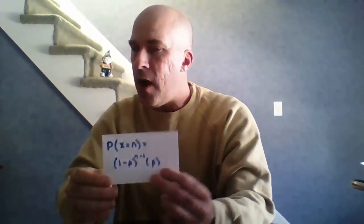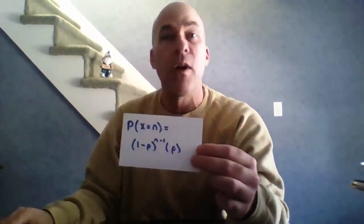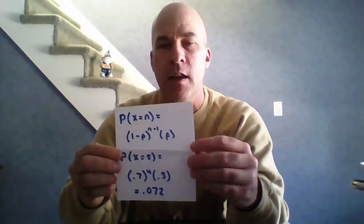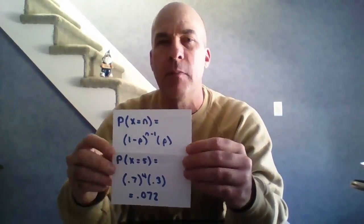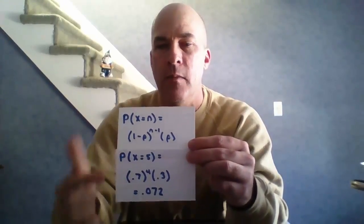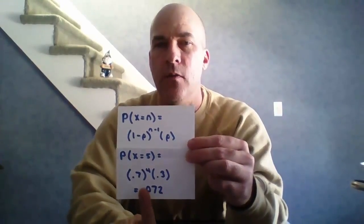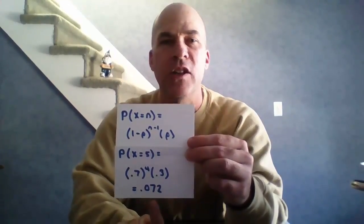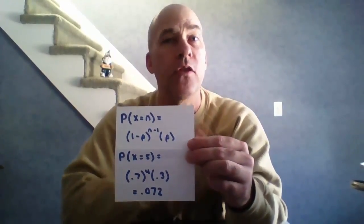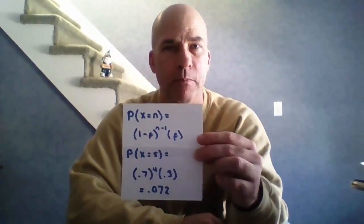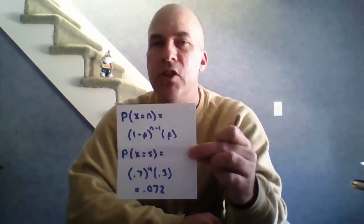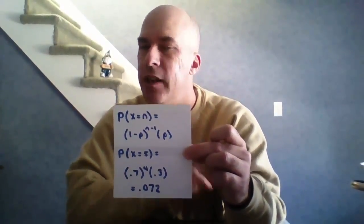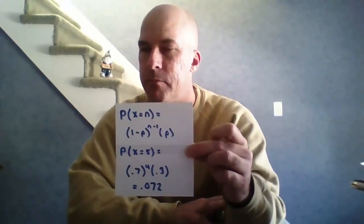In our problem, what's the probability it takes five trials? Using the formula, that means failing four times and then succeeding on the fifth: (0.7)^4 × (0.3). The calculations are not that bad. This is the formula for the geometric distribution — it feels like binomial, just a little bit different.